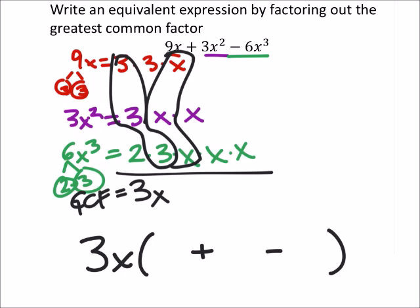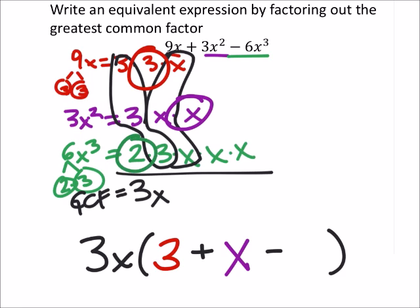And the operations are plus and minus. In red, I've got the 3 that's left over. That was my leading term, so I've got a 3 that's left. In purple, that's our middle term. I've got an x that's left over there. And then finally, in green, I've got a 2. And I've got these two x's as well. So, x squared.